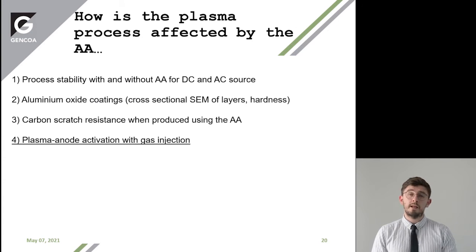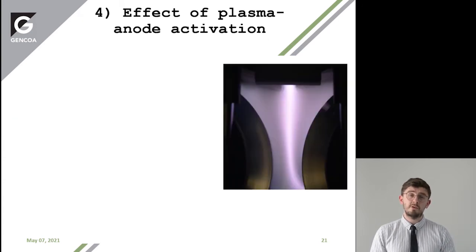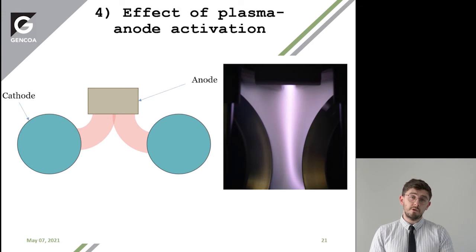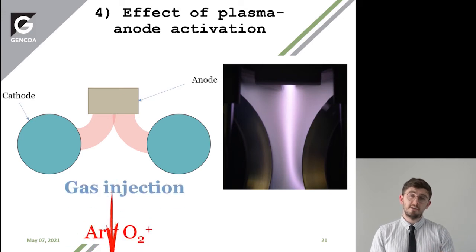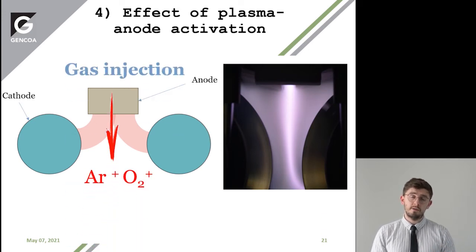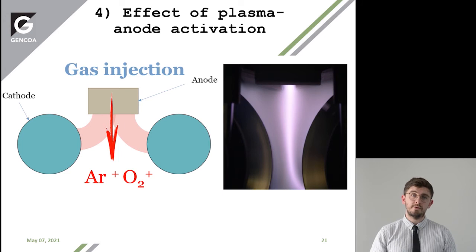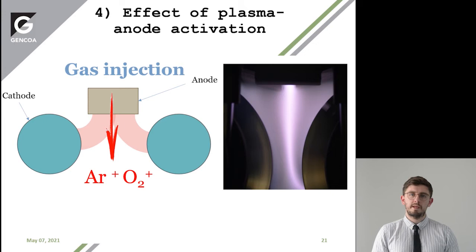Now we look at plasma anode activation with gas injection. In the earlier examples, the gas was injected into the walls of the chamber — but how is it affected if we inject the gas through the anode? In this image on the right, you can see this really intense region, with bursts of plasma from the anode.